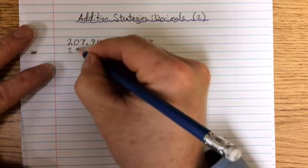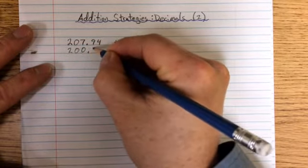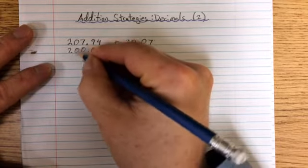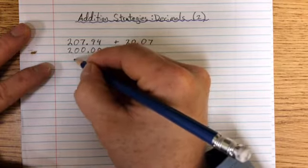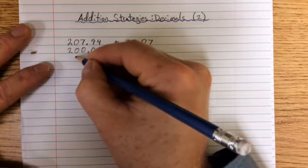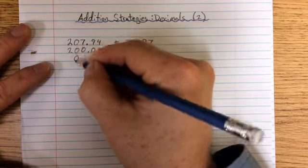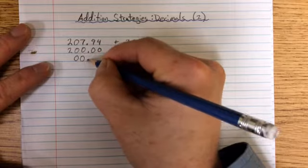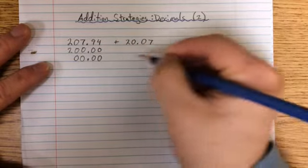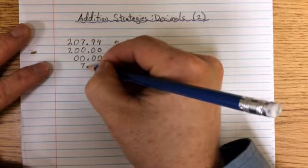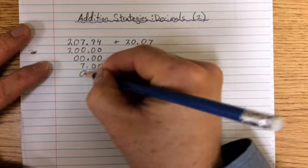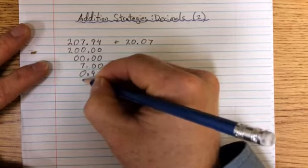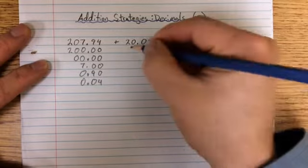We have our 2, which makes it 200. We have no tens here, but I have to actually represent it, and this is where a lot of kids just ignore it. They would put a 7 here, but if we don't put this tens place and account for it, we are going to lose our place value when we add across. We have our 7 ones, 9 tenths, and 4 hundredths.